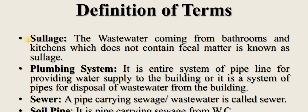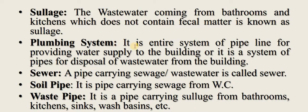Sullage: the wastewater coming out from bathrooms and kitchen that does not contain fecal matter is known as sullage. Plumbing system: the entire piping system provided for water supply to the building, or the system for disposal of wastewater from the building, is known as the plumbing system. It consists of one piping system for water supply and another for wastewater collection and disposal.